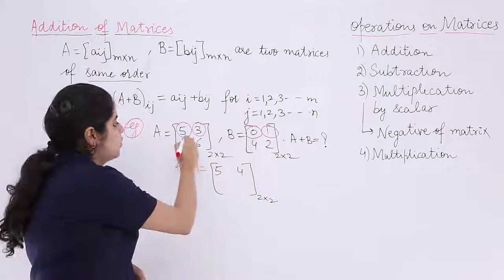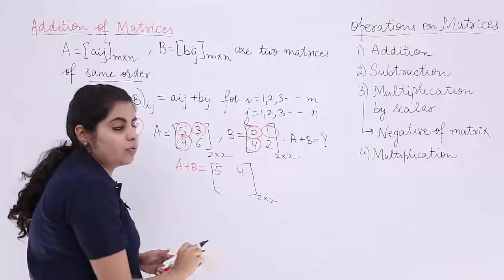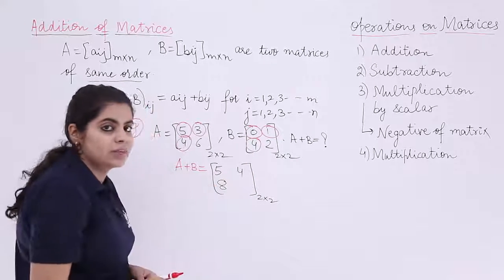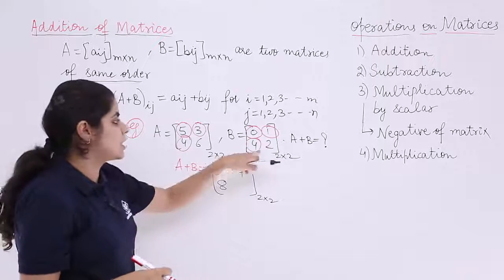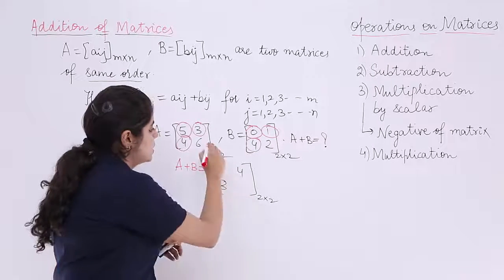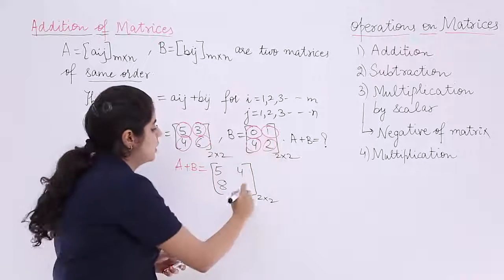What about the next case? 4 plus 4, what is it? It is 8. Last but not least element, how do you obtain it? 6 plus 2 is 8.